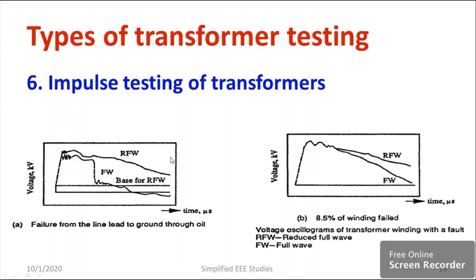If you compare the full wave and reduced to full wave waveforms, there is too much deviation — the voltage is drooping down. What does it mean? Voltage drooping down means there is definitely conduction. Whenever a switch is on, voltage becomes zero — voltage moves towards zero, just like a short circuit. That means the insulation part is becoming a conductive section, which is why voltage suddenly droops.